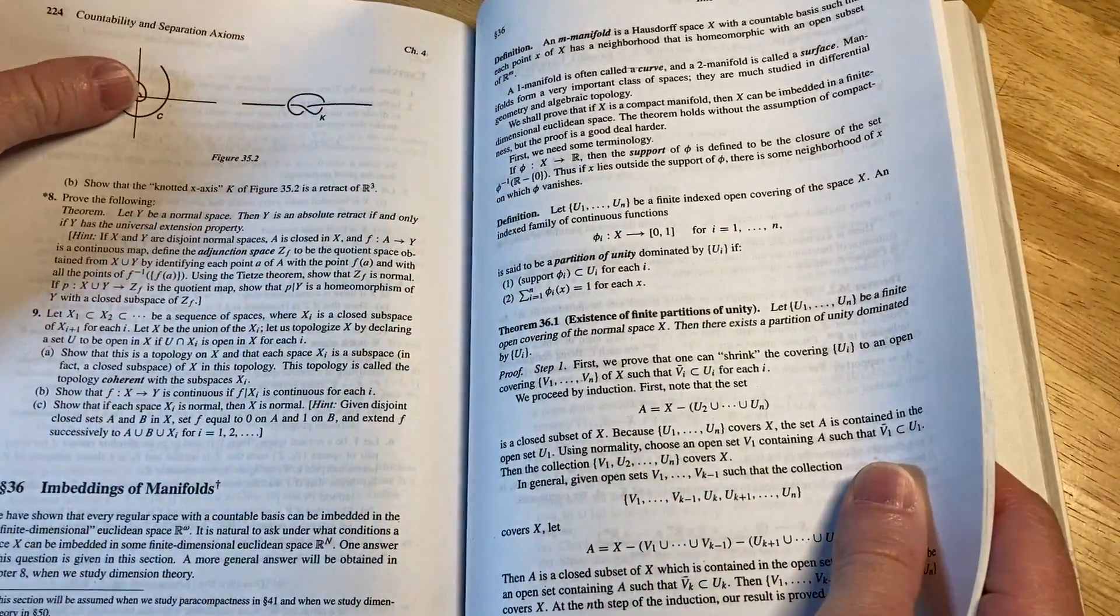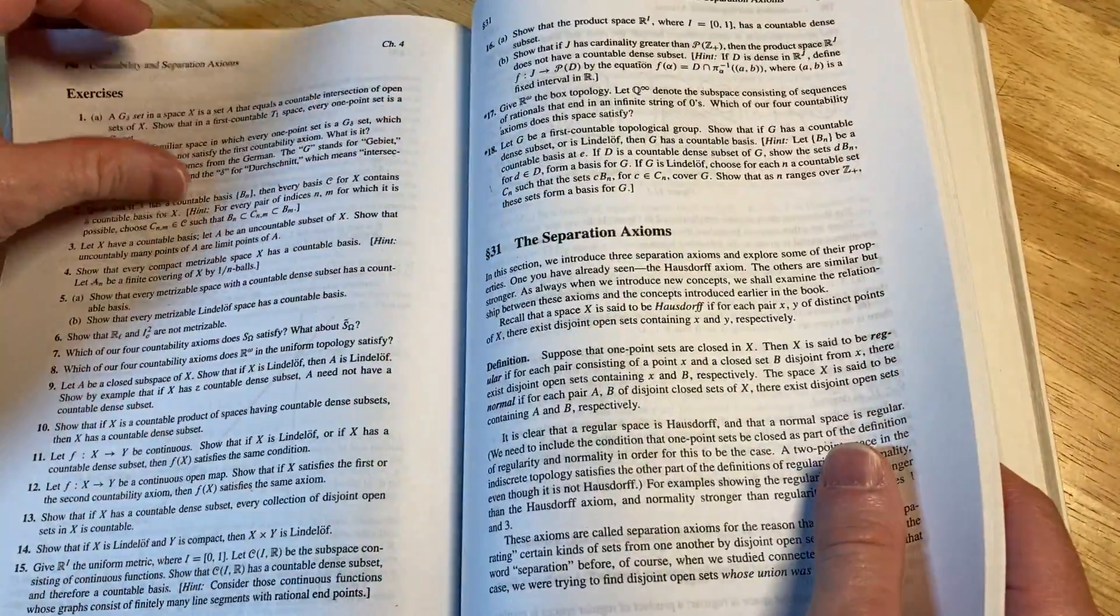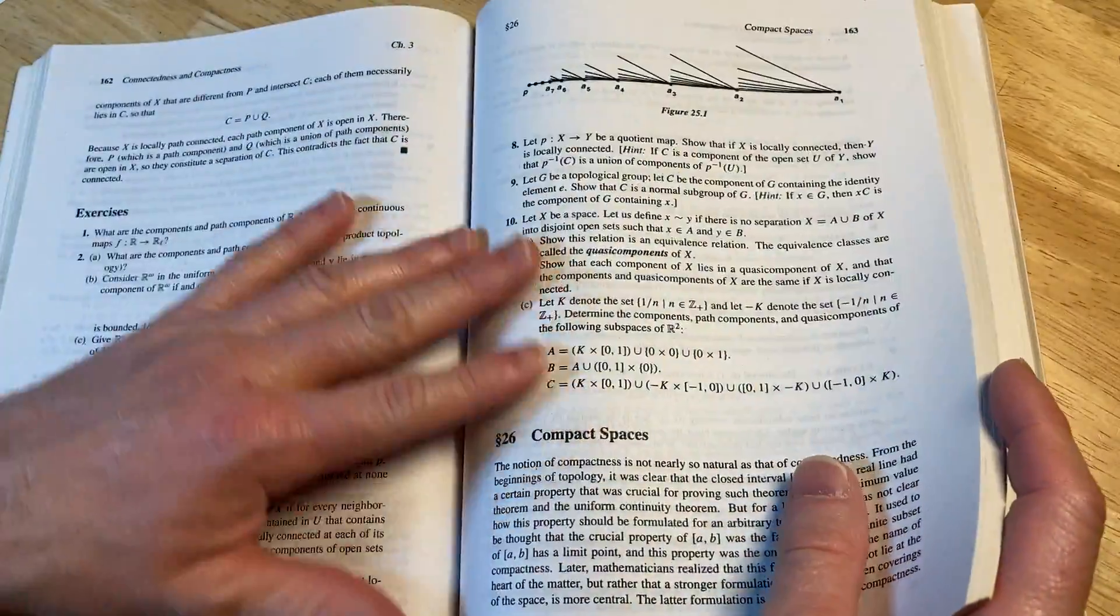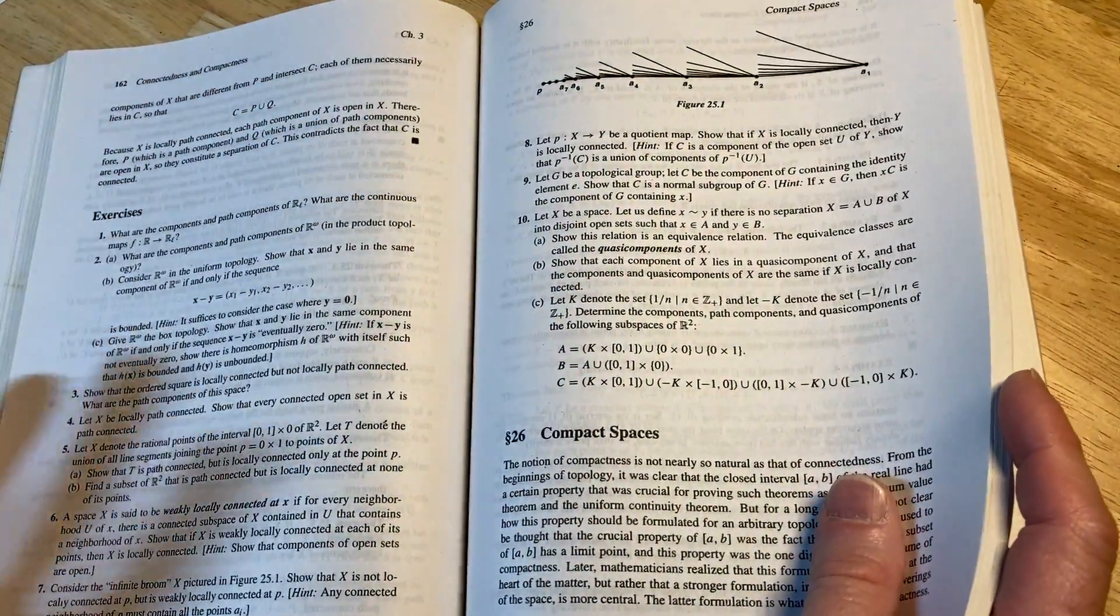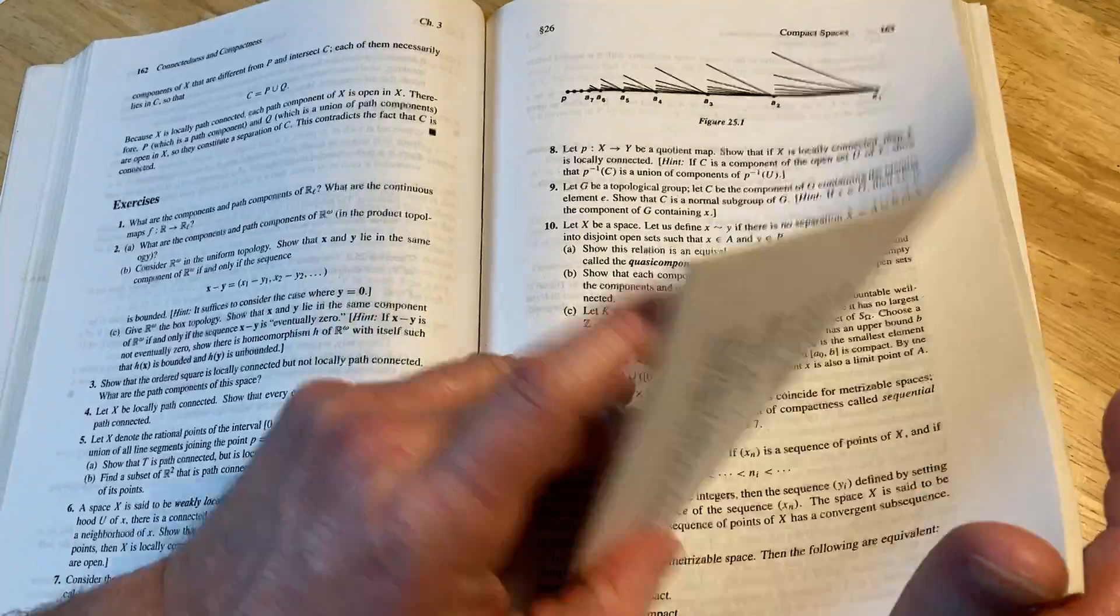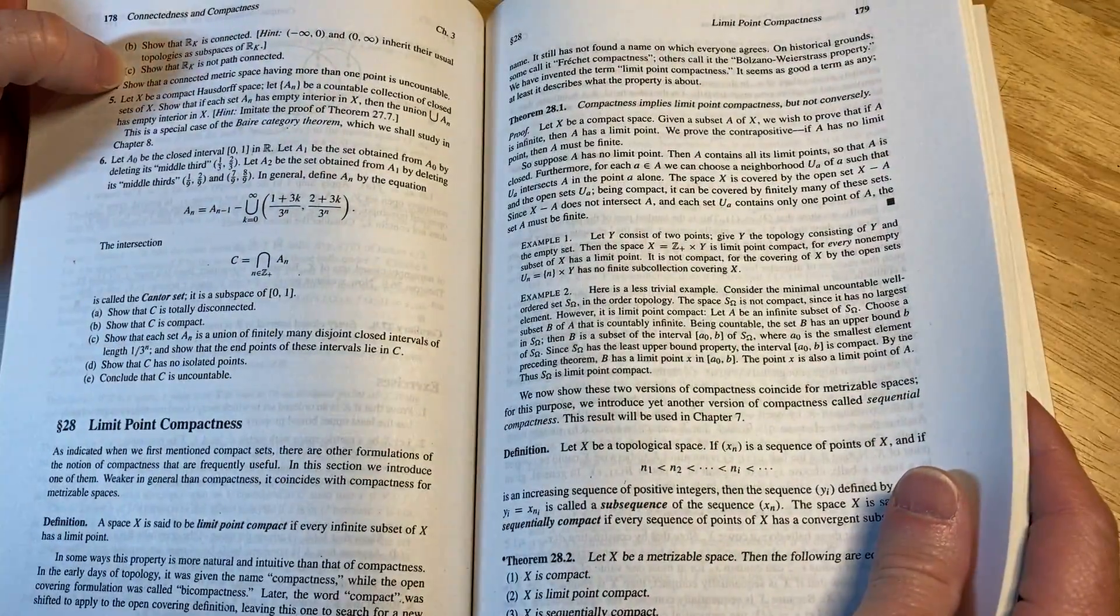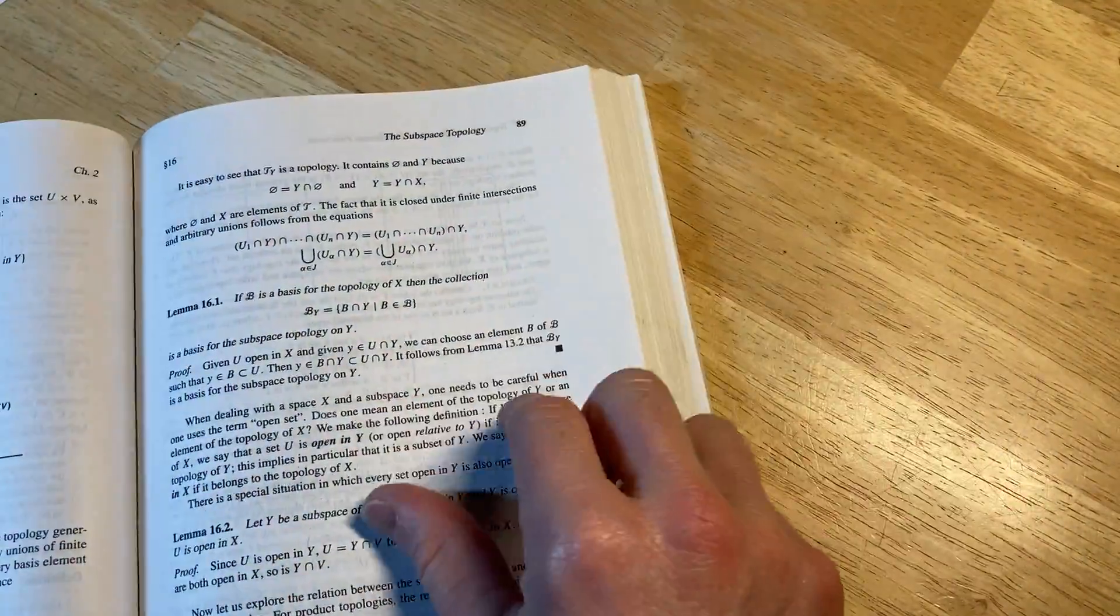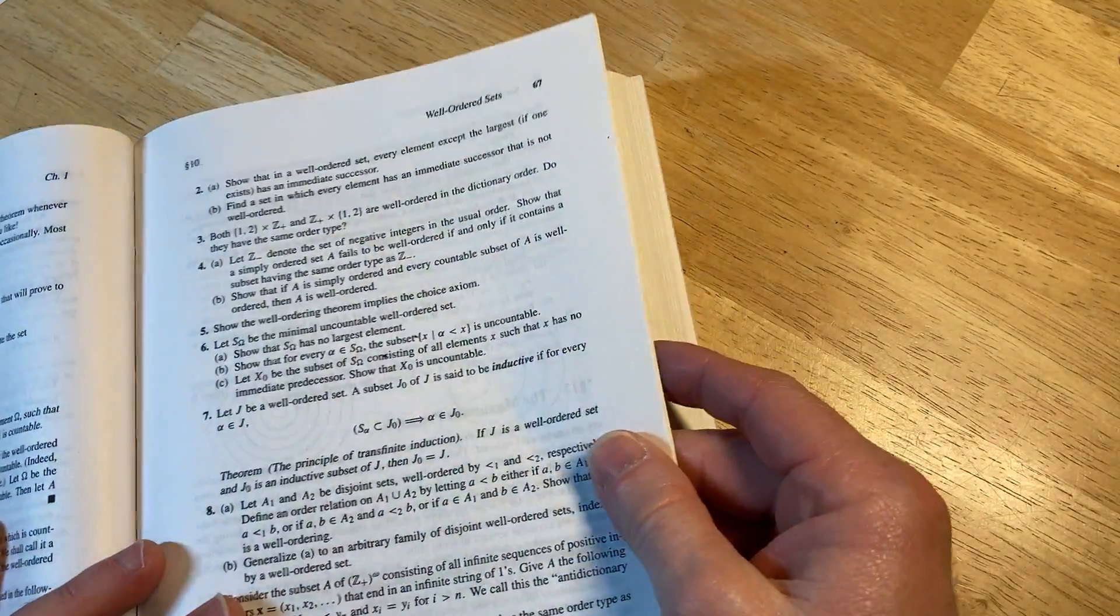But you can use this book for self-study. It's just when you get to the exercises, you don't have any hints or anything. Most of the time, you know when your proof is right. You're like, oh okay, I proved this. I will leave a link in the description of this video to this book, in case you want to pick up a copy.